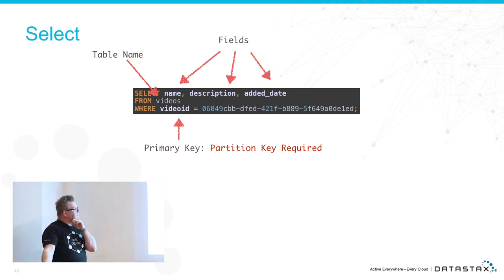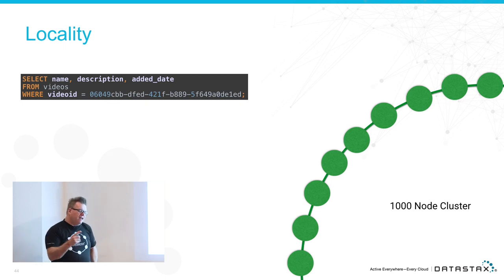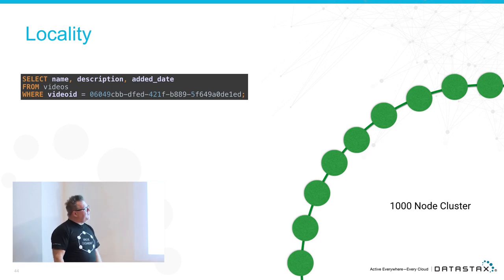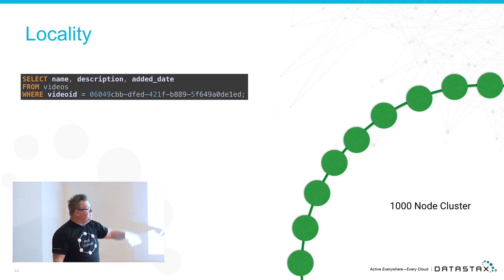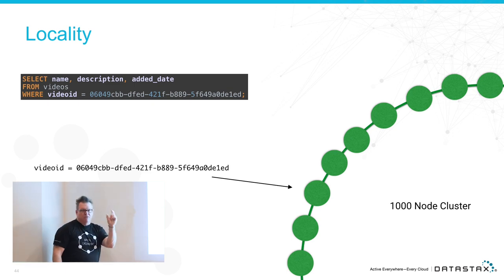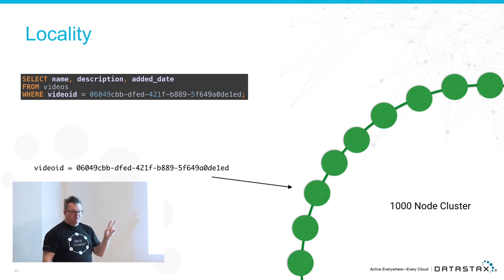Why is a partition key important? Let's say you have a thousand-node cluster — those are in the wild, they exist. A thousand-node cluster is a lot of data spread out over a lot of nodes. If I want to find a specific video ID, I do not want to scan the whole thing — that's a Spark job, it'll take a while. But if I put that partition key through a MurmurHash3 and get a token, I know exactly which node it's on. It'll always be on that node. With a thousand nodes or four nodes, it doesn't matter — it's always in the same place.